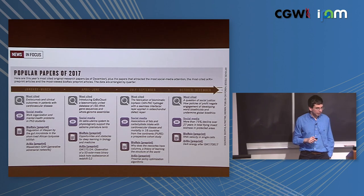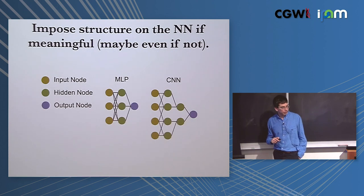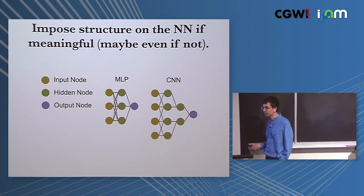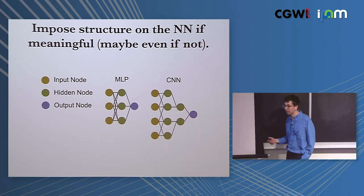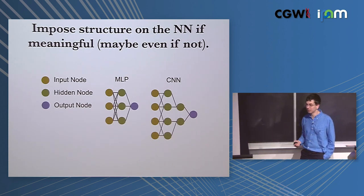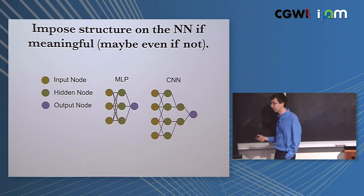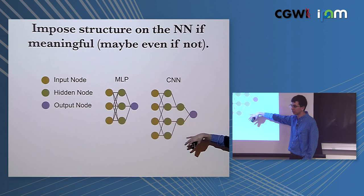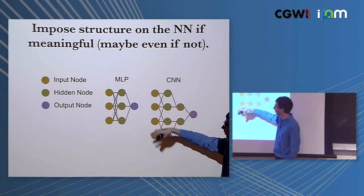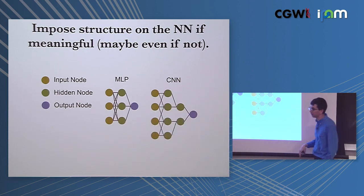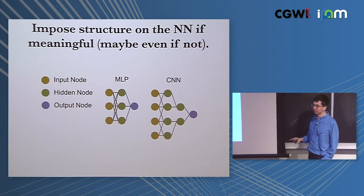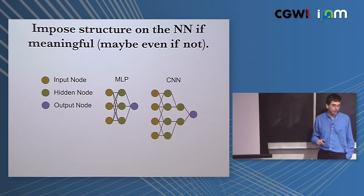Here are some things we learned. If your problem has structure, you should really impose it - your life will be much easier, especially when working with limited amounts of data. If you can choose a convolutional neural network over a multilayer perceptron with fully connected layers, do that if your problem fits, because your life will be worlds easier.